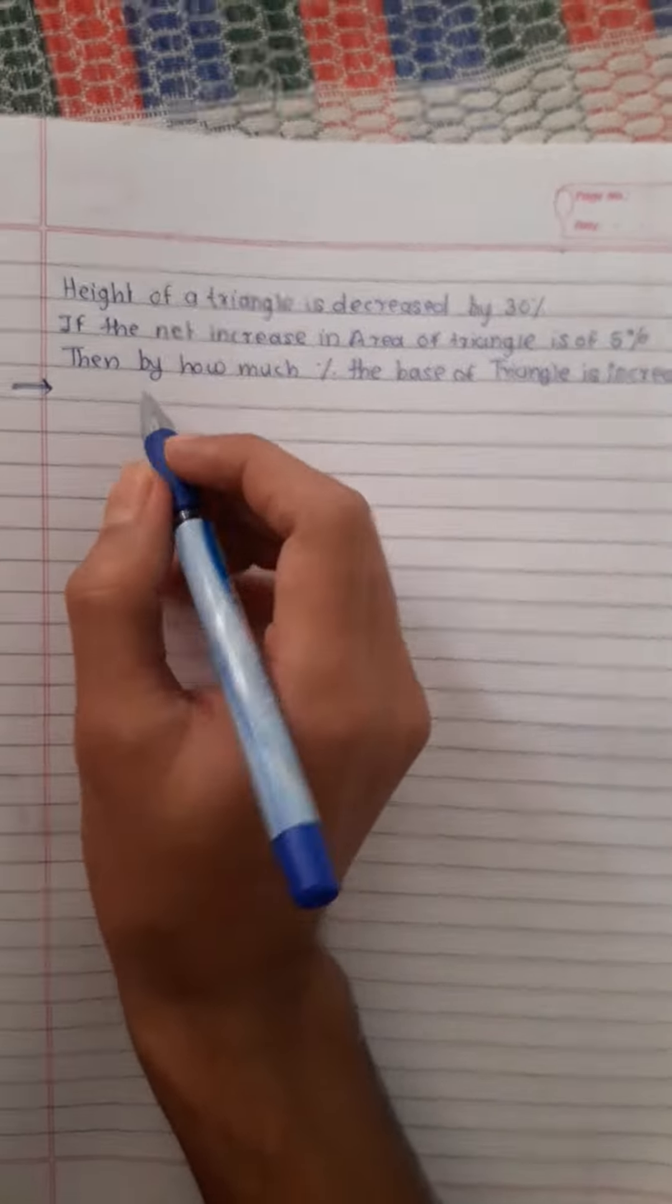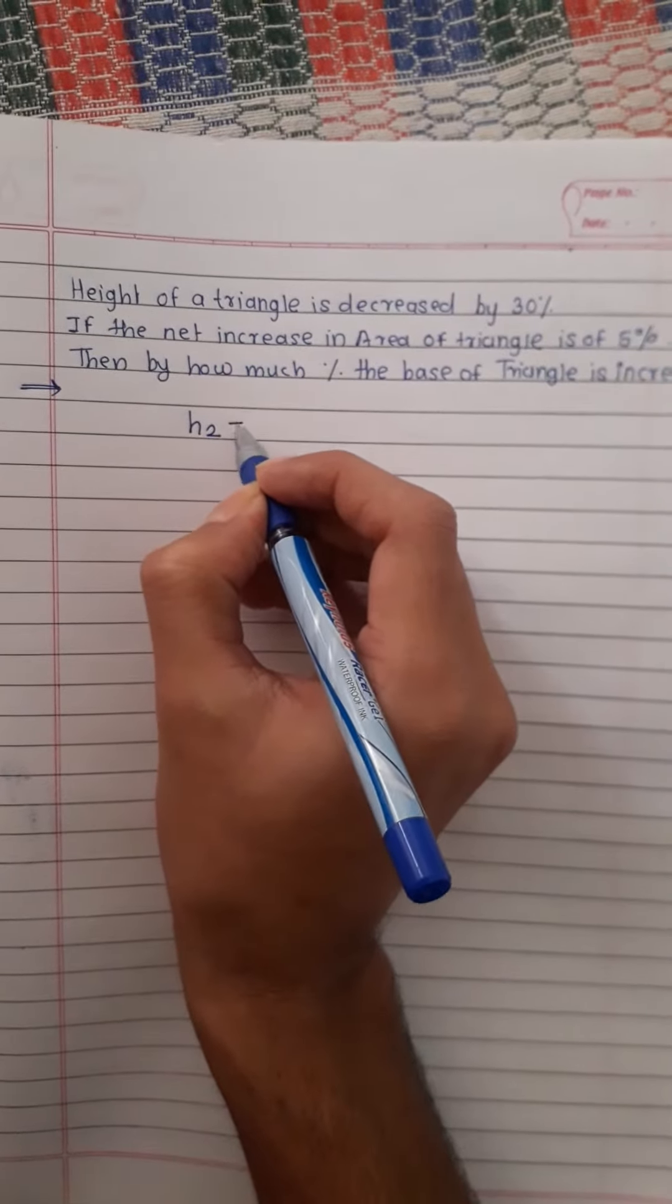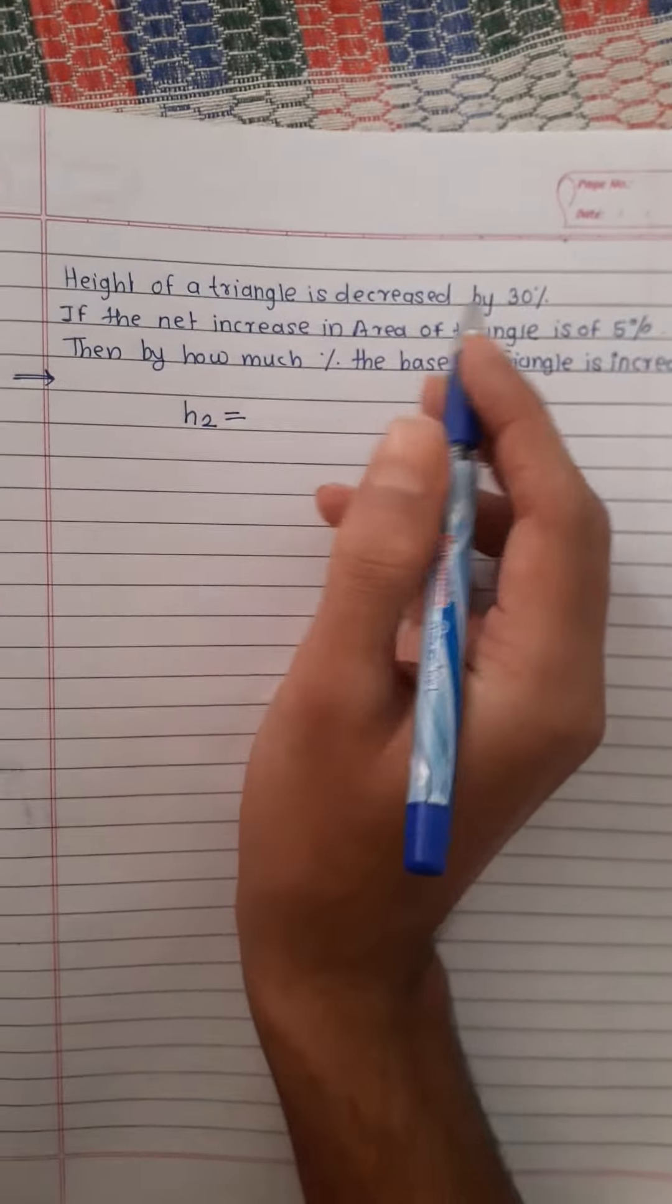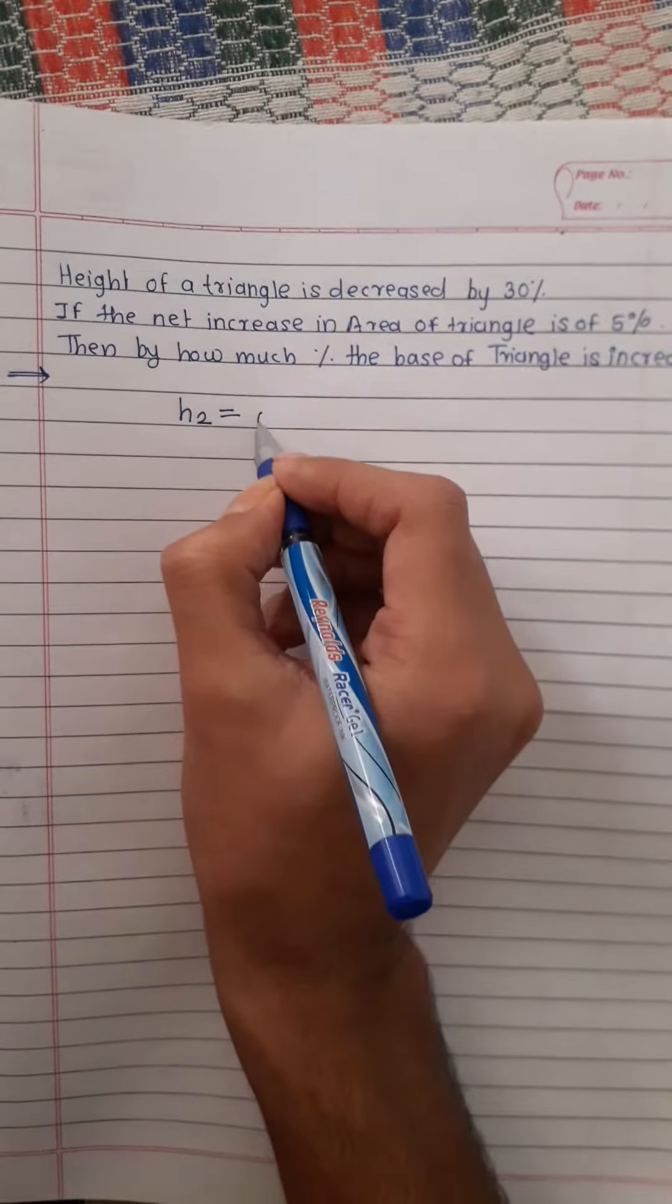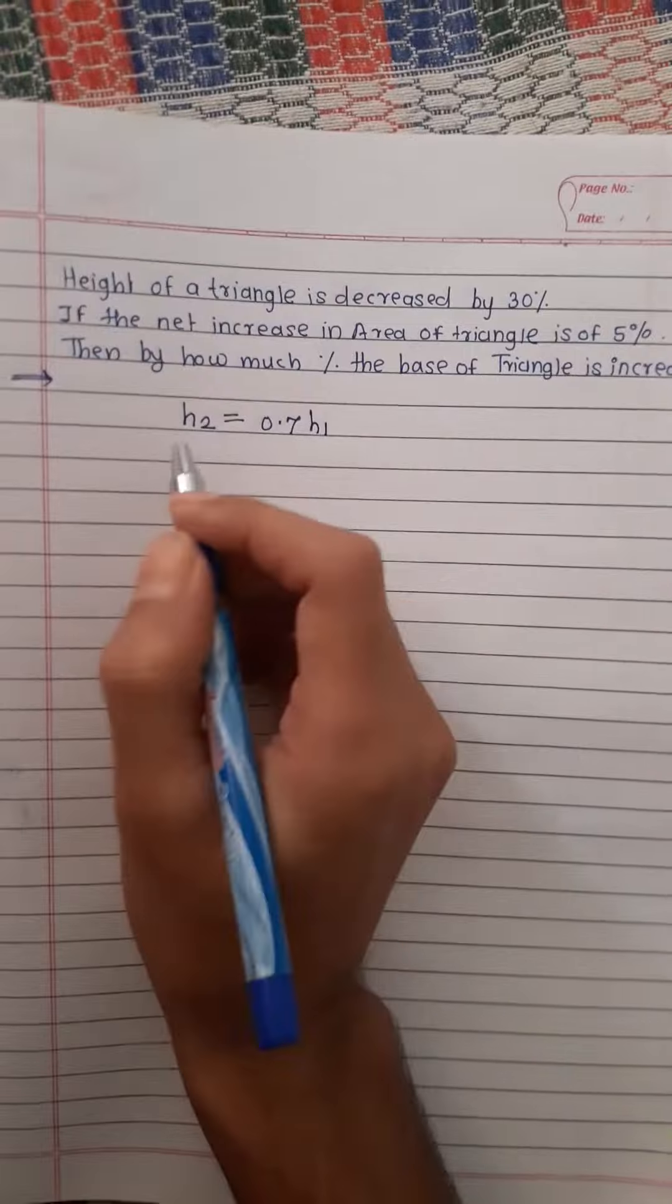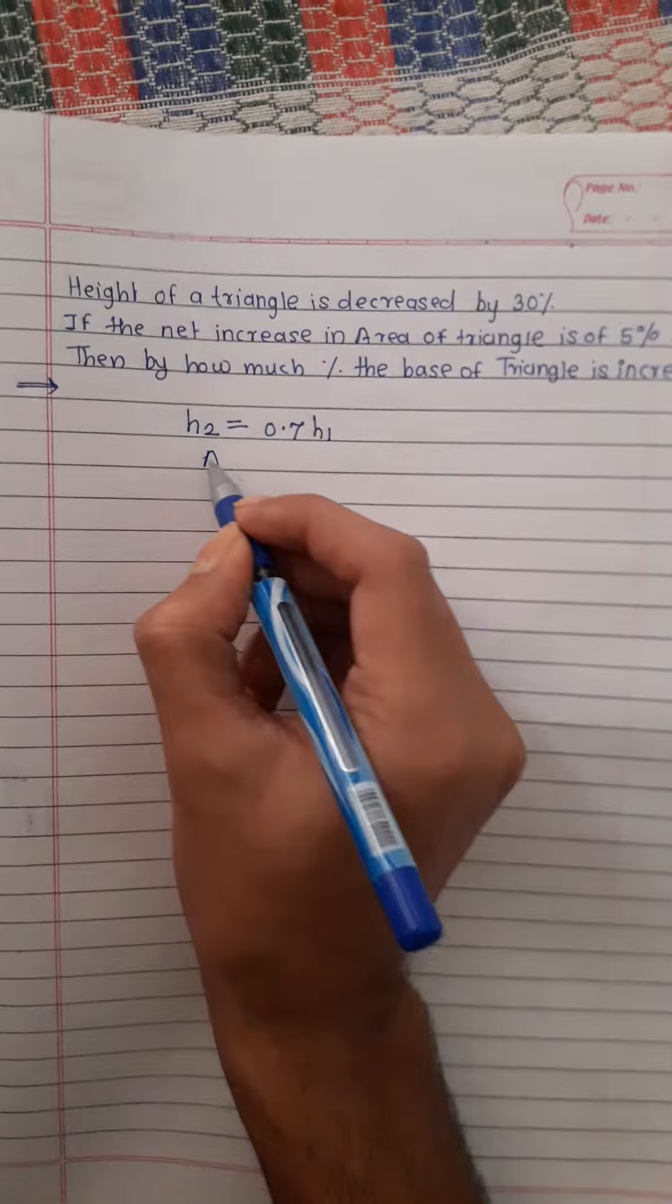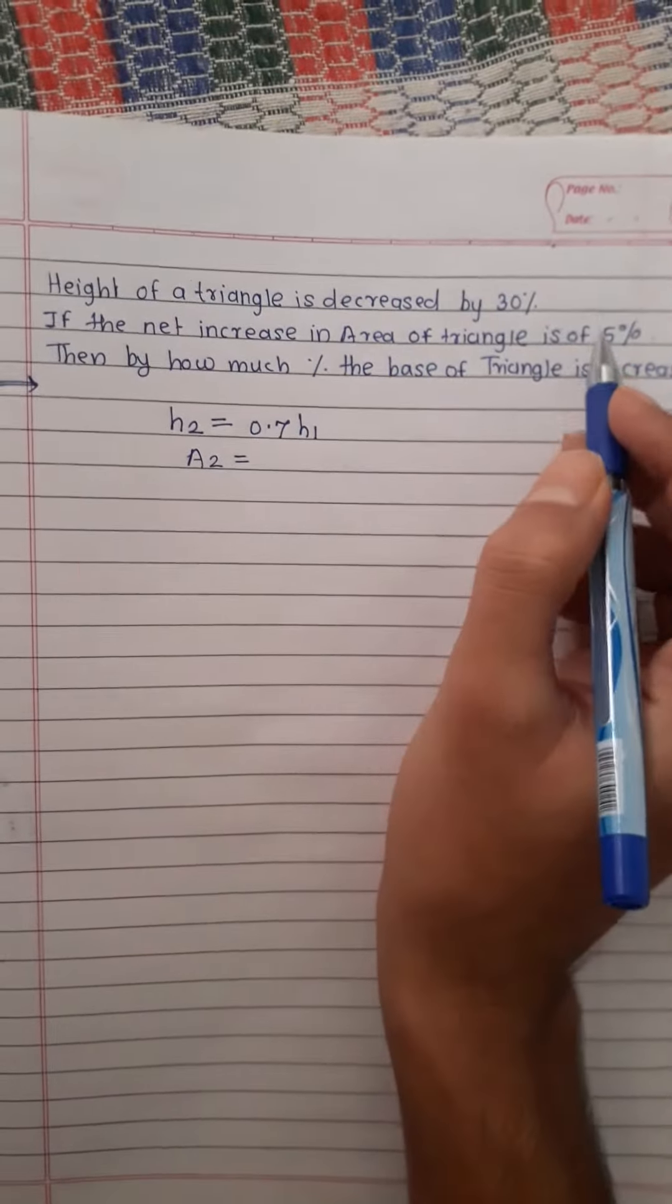Here it is given that h₂, height of second triangle, is decreased by 30 percent. It means 0.7 of h₁. And if the net increase in the area of triangles, that means A₂ is equal to, it is given as 5 percent, it means 105 upon 100 of A₁.